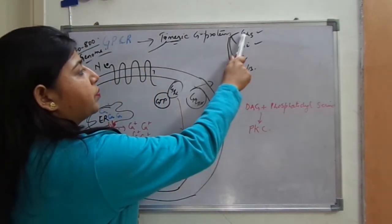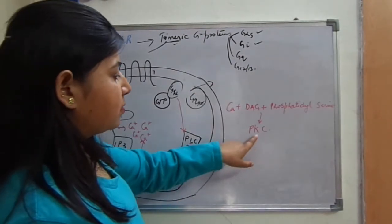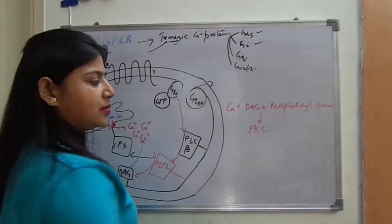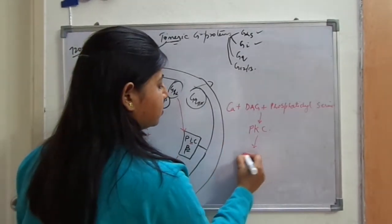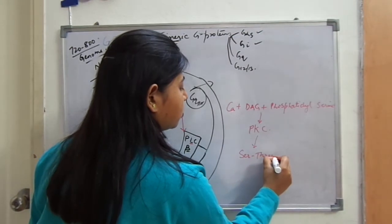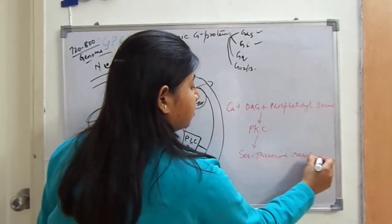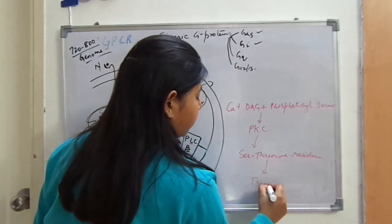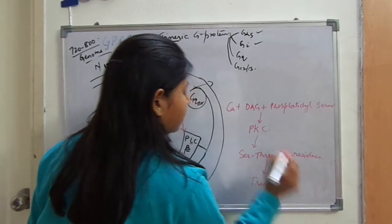This combination activates protein kinase C. Remember, in the G-protein coupled receptor G-S pathway, protein kinase A was activated; here protein kinase C is activated. All protein kinases further activate serine and threonine residues inside the cell, and this will further start many transcription pathways inside our cell.